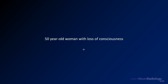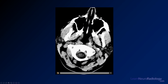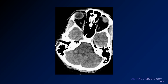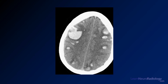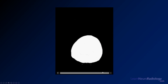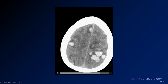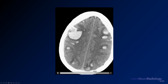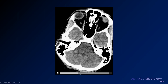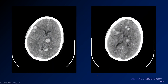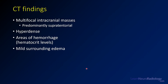Our second case is a 50-year-old woman with loss of consciousness. Looking at the CT, it doesn't take long to figure out there are a lot of problems. You can see there are many masses — many of them are hyperdense, and there appear to be fluid levels as dense as hemorrhage. So you've got a number of hemorrhagic lesions: masses that have some hemorrhage. Describing representative slices: hyperdense masses, edema around them, multiple lesions — predominantly supratentorial, hyperdense with areas of hemorrhage, and hematocrit levels that really tell you there's hemorrhage there. There is surrounding edema, but not a lot of midline shift or downward herniation.